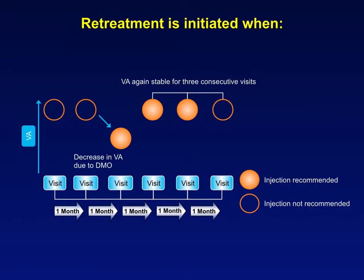If the patient complains of diminution of vision or a reduction in best corrected visual acuity is detected, a new OCT is ordered. If it shows that this reduction is due to the recurrence of macular edema, we start to re-inject those patients again until we reach the maximum best corrected visual acuity on two consecutive visits with a dry OCT.